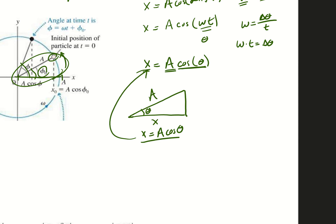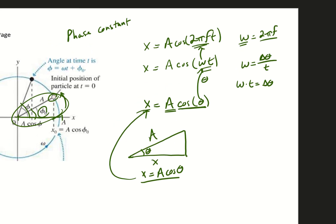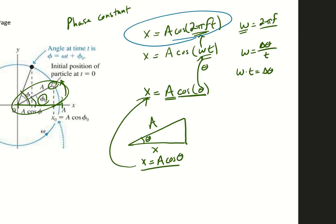Hopefully this makes sense with where the equation comes from. I'm just saying x equals the cosine leg of that triangle, then replacing theta with omega times t, and then replacing omega with 2πf times t. This is just a breakdown of where that equation comes from — it's not a brand new expression. It's actually just our basic definition of trig applied with angular motion.